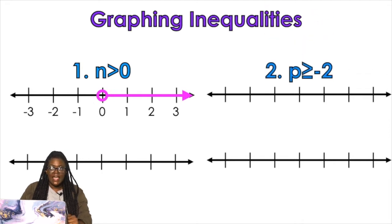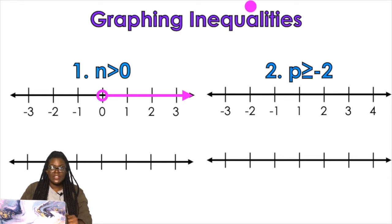So let's say I have p is greater than or equal to negative two. I'm gonna do the same thing — set my number line, find negative two, pay attention to the symbol. This one has a little line under it, so my circle is closed. And it's greater than, so we're going to the right.